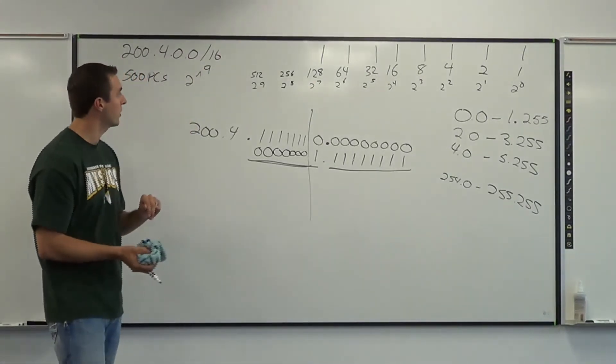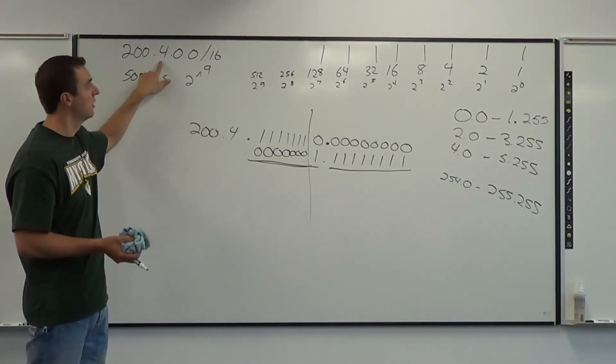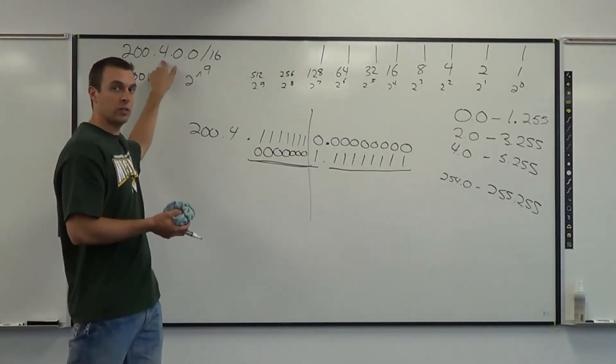So when you get to these larger networks, just know you're going to be working with 2 or maybe even 3 octets. And the process is essentially the same. You just need to extend your chart so you can figure out which power number that you need.